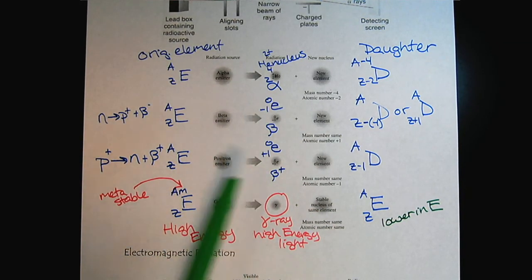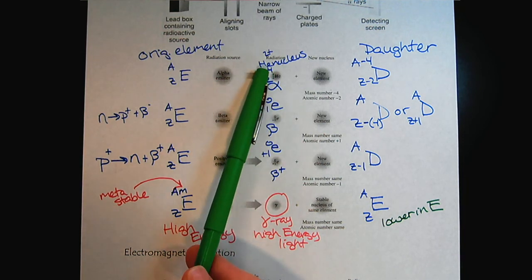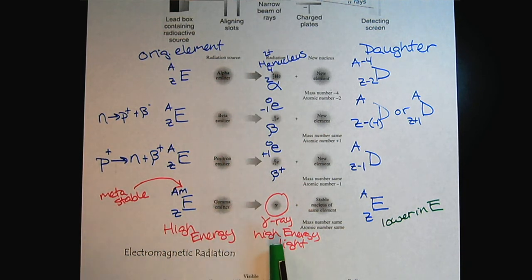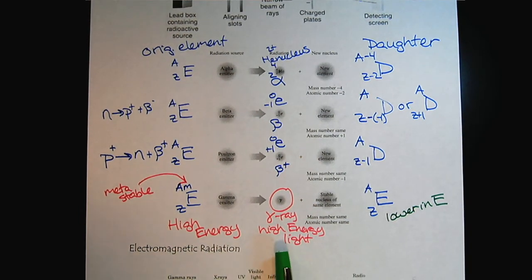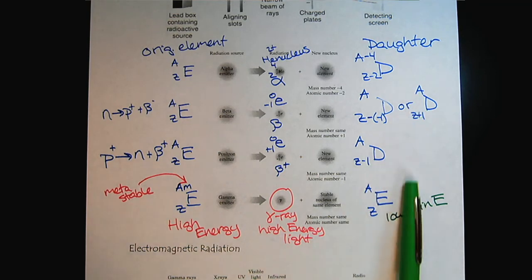It's also important to note that when we do have alpha, beta, or positron decay, in addition to releasing these particles, there may be a release of a gamma ray as well to vent off additional energy to help stabilize the daughter or the product.